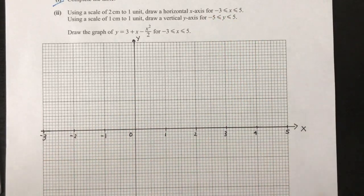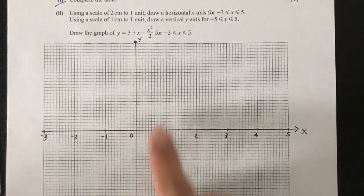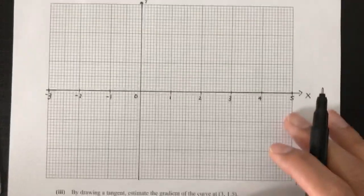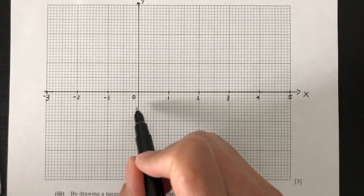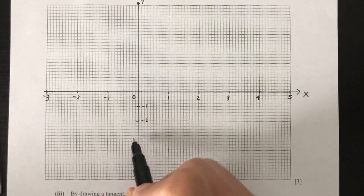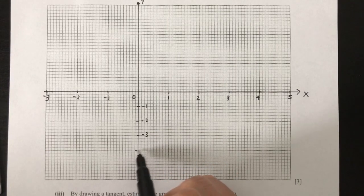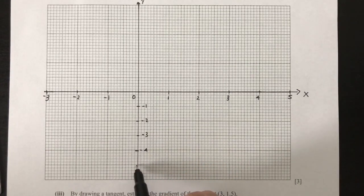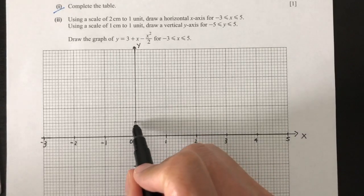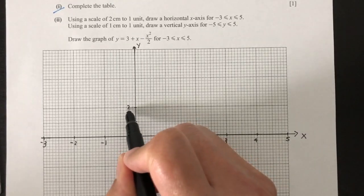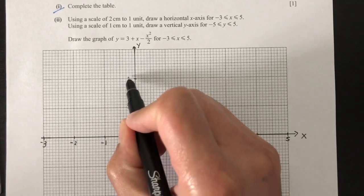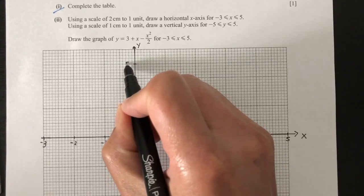Now for the y-axis, it has to be 1 to 1, from minus 5 to 5. So going downward: minus 1, minus 2, minus 3, minus 4, and minus 5. And then going upward: 1, 2, 3, 4, and 5.